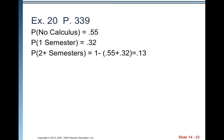And you'll see that the probability of having no calculus is 0.55. The probability of one semester of calculus is 0.32. And the probability of having two or more semesters is one minus the sum of the other two, so 0.13. Because that's the only, there I use the complement rule.